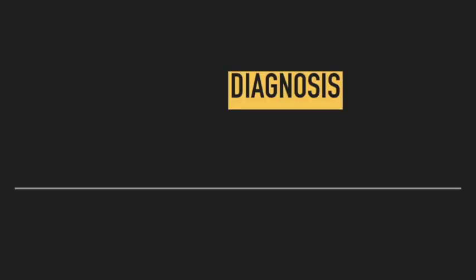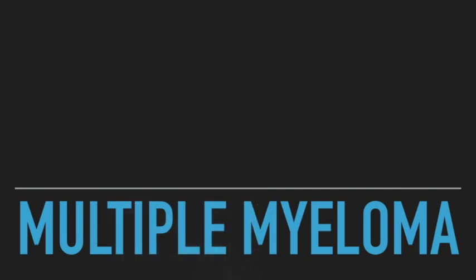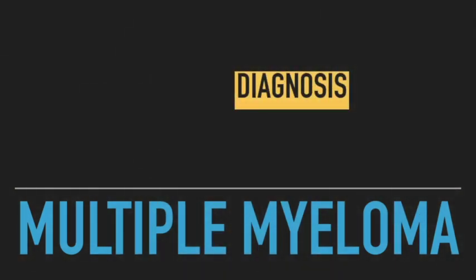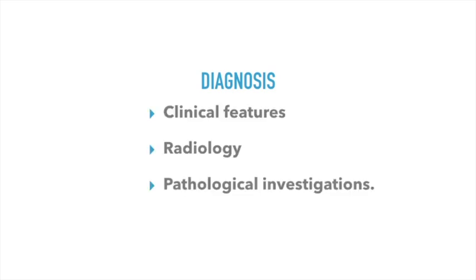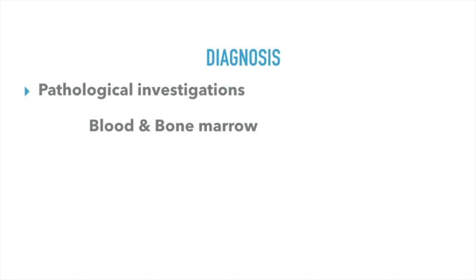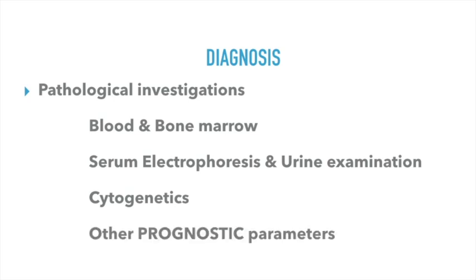The diagnosis of multiple myeloma requires a combination of clinical features, radiology, and pathological investigations. The pathological investigations include blood and bone marrow examination, serum and urine electrophoresis for M protein, and urine for Bence Jones proteins, cytogenetics commonly involving the IGH locus on chromosome 14, and other parameters like serum albumin and beta-2 microglobulin levels.